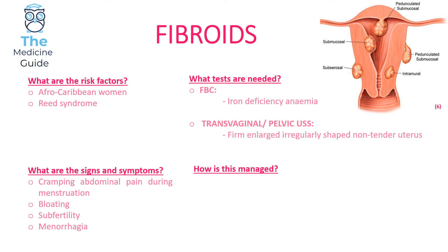In terms of tests, we do a full blood count because fibroids can cause iron deficiency anaemia due to the menorrhagia. We also need to do a transvaginal or pelvic ultrasound scan, which will show a firm, enlarged, irregularly shaped uterus.